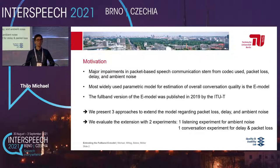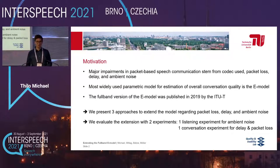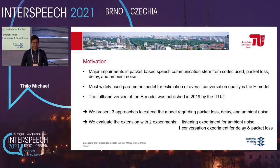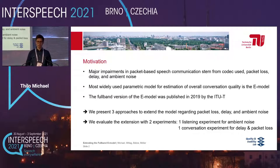In current voice-over-IP speech communication scenarios, the major impairments in such networks stem from the codec that is used, lost packets during transmission over the internet, delay when a packet takes longer to arrive, and ambient noise at the sending or receiving site. There is a well-known parametric model used to estimate conversational quality called the E Model. While the narrowband and wideband versions have been well-established, the full-band version was recently published in 2019 by the ITU-T in recommendation G.107.2. Today I'm going to present three approaches to extend this model regarding packet loss, delay, and ambient noise.